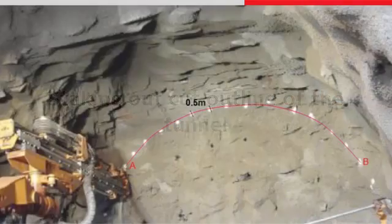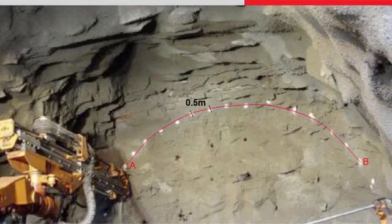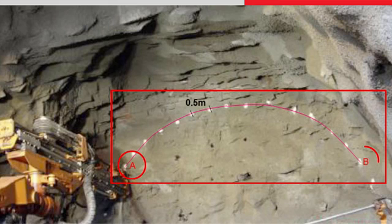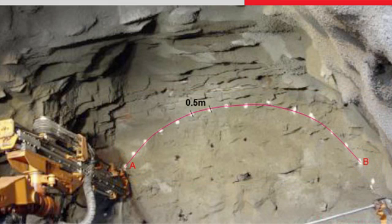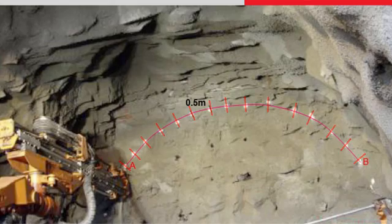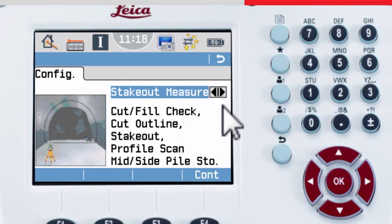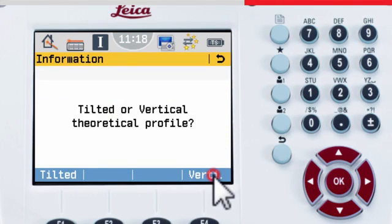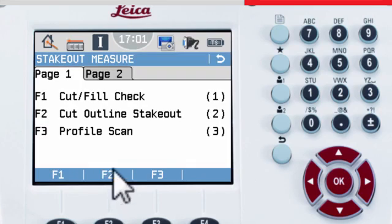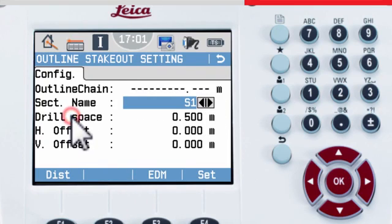Imagine you need to stake out the profile where the tunnel should be drilled and blasted. We will look at how to define the drill spacing and offsets which define the profile. Here you can see the first element of the profile drawn from A to B, and we want to stake out every 0.5 meters along the profile. Choose stake out measure from the main menu. Define whether the profiles are tilted or vertical, and then choose cut outline stake out. Choose the appropriate cross section to stake and then enter the drill spacing required.